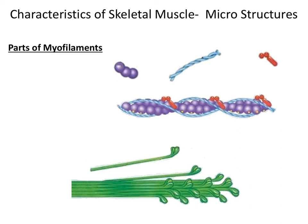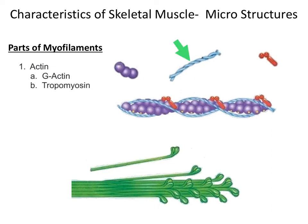We're going to take a look at the different parts of the myofilaments. The first myofilament is actin. Actin has three parts. The first is G-actin, or globular actin, which are the spherical structures shown here. When strung together, G-actin forms F-actin strands. G-actin contains the active binding site for which the myosin head will attach and form a crossbridge. The next part is tropomyosin, whose function is to cover the active binding site of G-actin. And finally, troponin is attached to tropomyosin. When calcium is present, calcium will bind to troponin, which pulls on tropomyosin and eventually exposes the active binding site of G-actin.